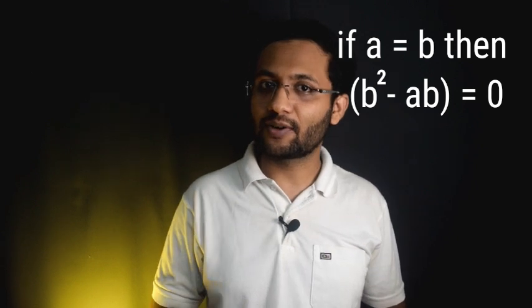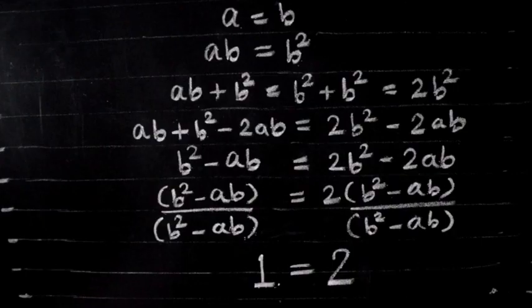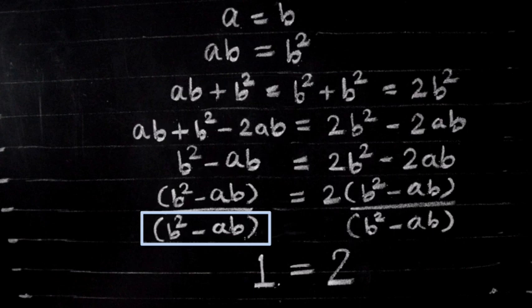And a = b as per our initial assumption, so actually we divided by 0. Dividing both sides of the equation is only valid if the divisor, that is the term by which we divide something, is not equal to 0.